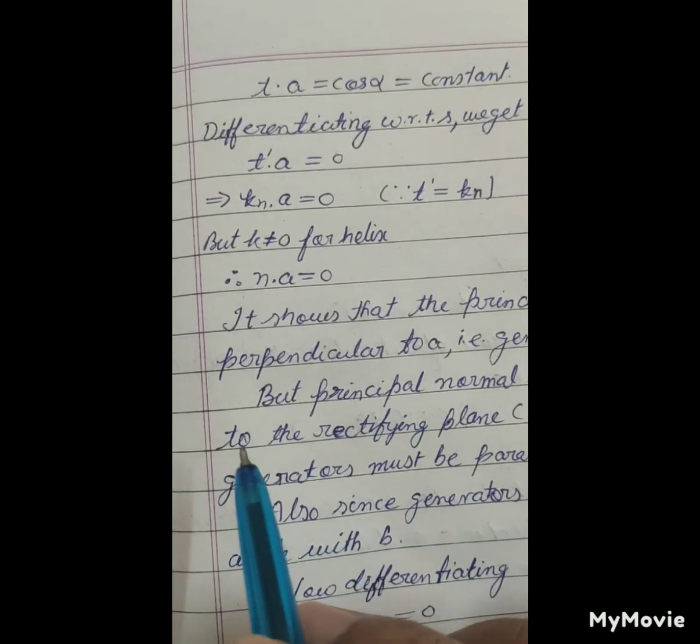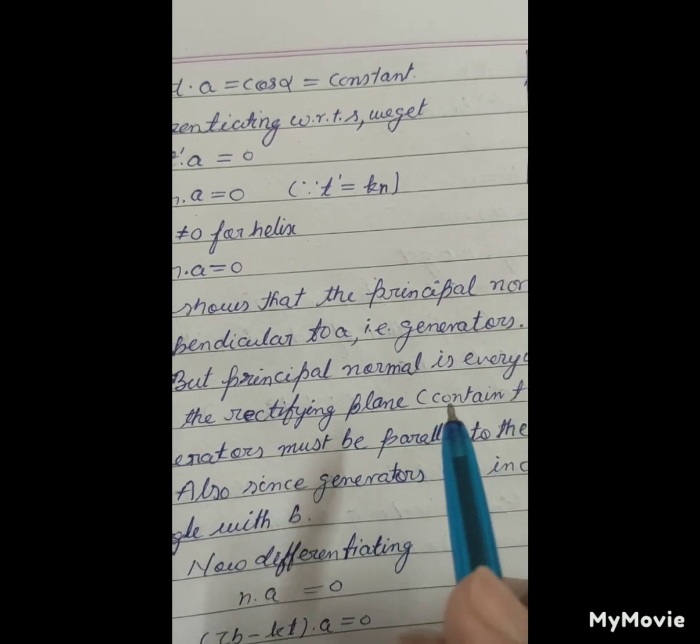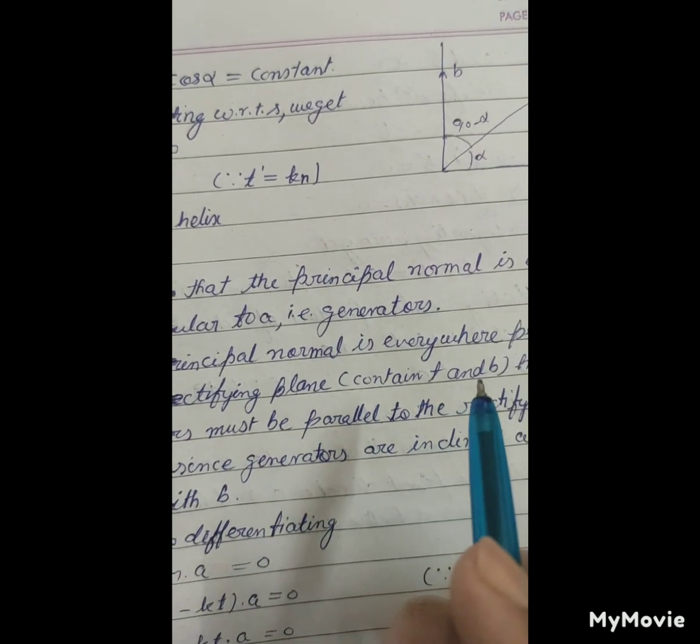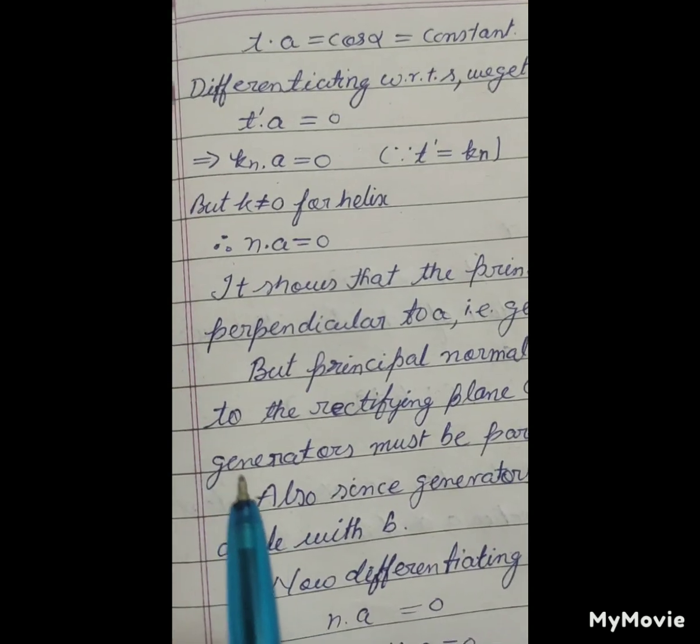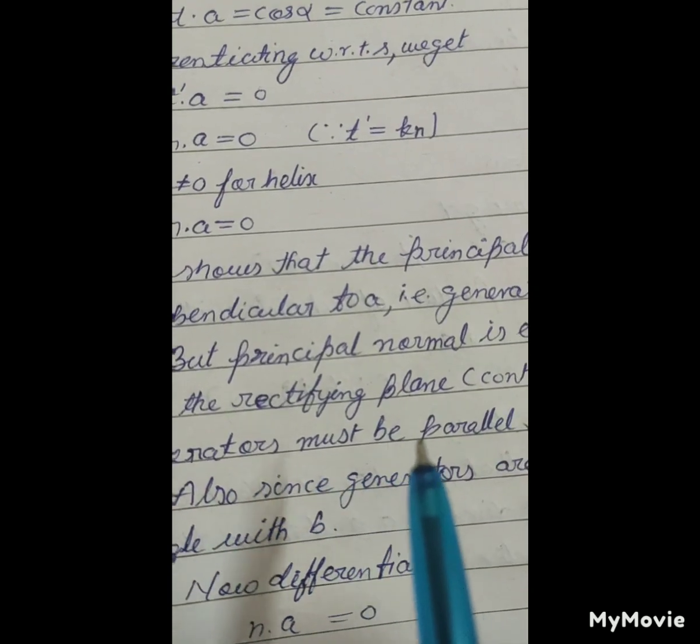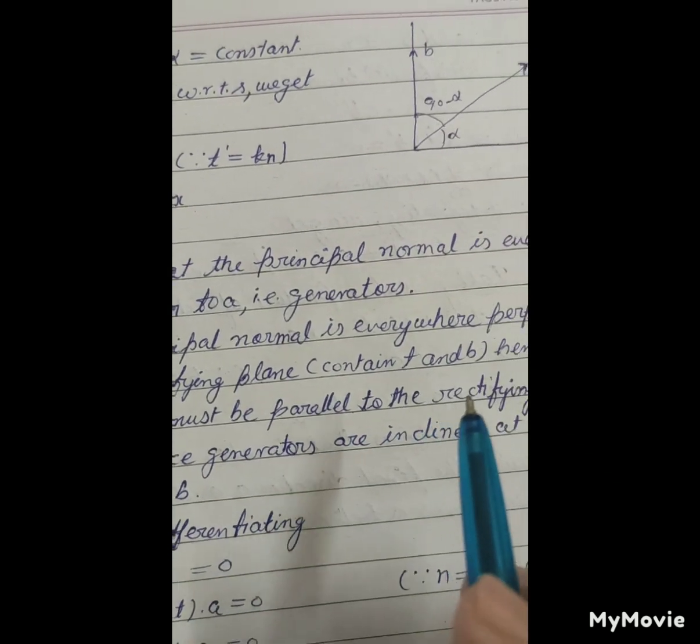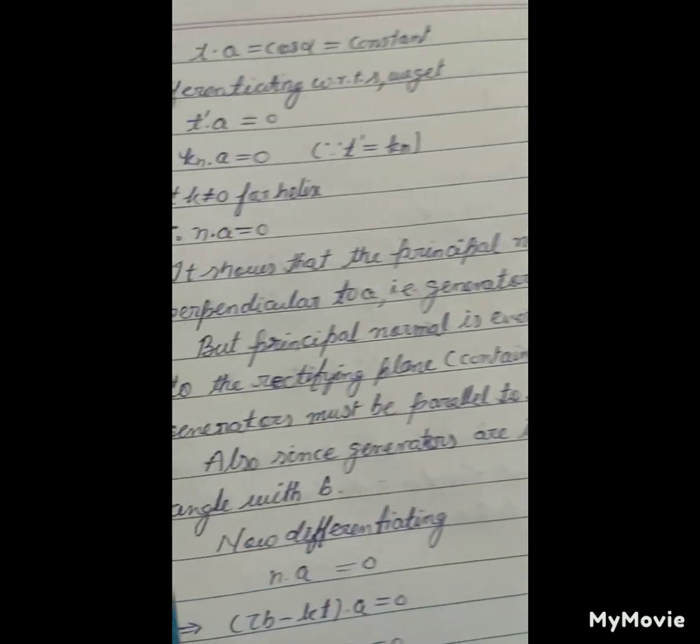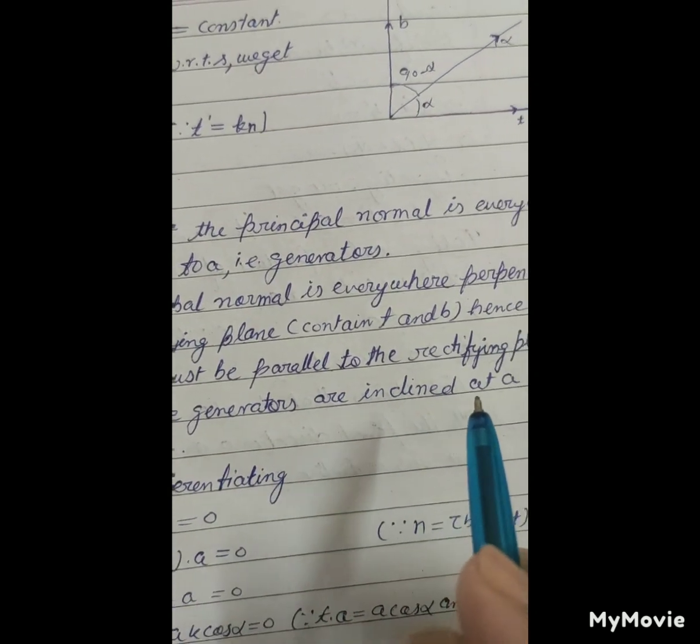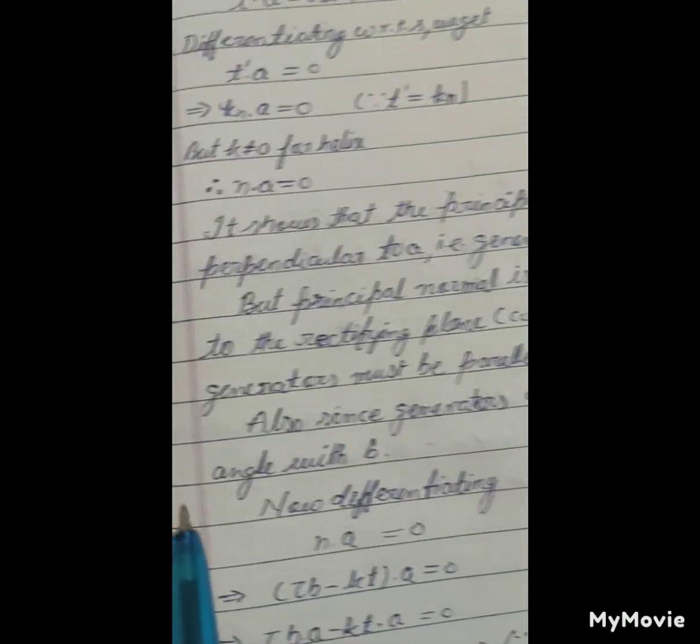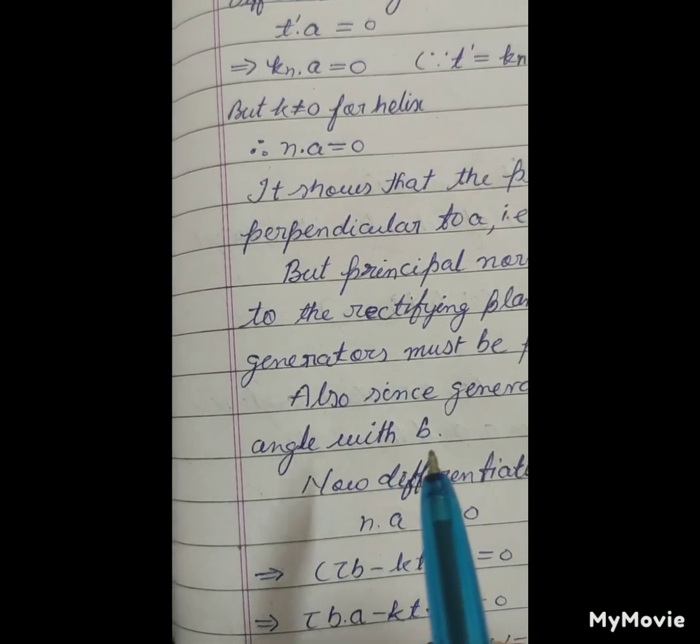But the principal normal is everywhere perpendicular to the rectifying plane containing T and B. Hence the generators must be parallel to the rectifying plane. Also, since generators are inclined at a constant angle with B.